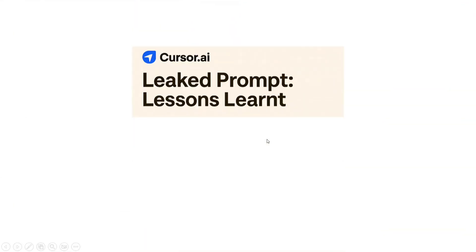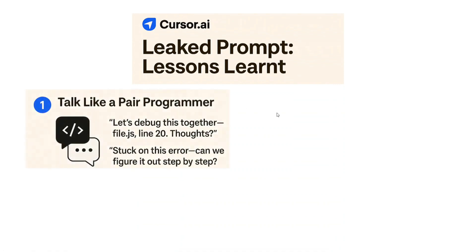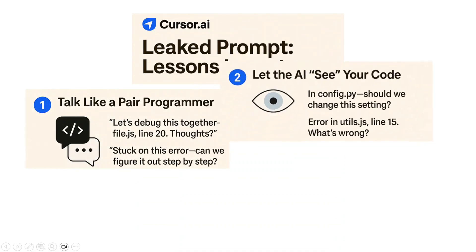The first thing I learned about prompt engineering from Cursor's prompt is: talk like a pair programmer when asking for code. Don't just ask it to write code — instead say things like 'let's debug this together' or 'I am stuck on this error, can you help me out?' The AI should feel like it is working with you rather than working for you.